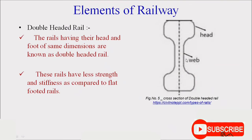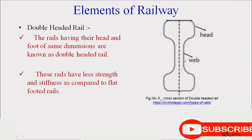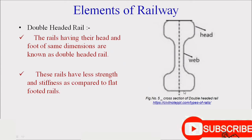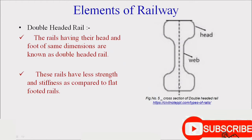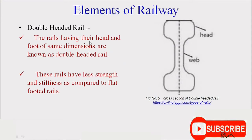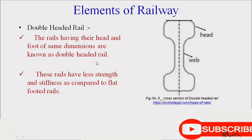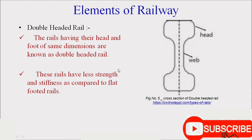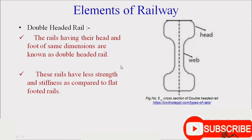Double-headed rails have both the upper section (head) and lower section (foot) of the same size. Rails whose head and foot are of the same dimensions are known as double-headed rails. These rails have less strength and stiffness compared to flat-footed rails.